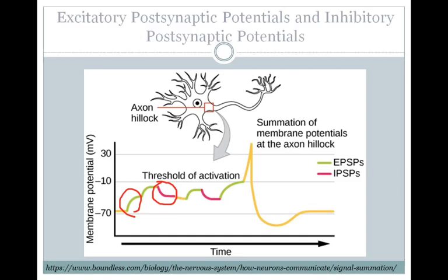These are often abbreviated as EPSPs for excitatory postsynaptic potential and IPSPs for inhibitory postsynaptic potential. By the end of this lecture, you should understand how these will all sum to either get you to threshold and fire an action potential, or to keep you away from threshold and prevent the neuron from firing an action potential.